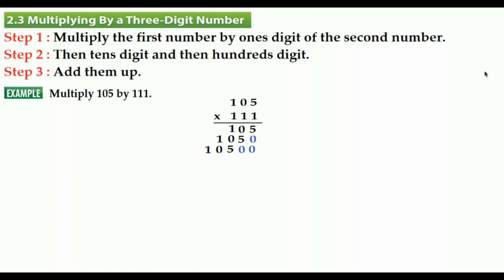Now we are going to add them up. 5 plus 0 plus 0 makes 5. 0 plus 5 plus 0 makes 5. 1 plus 0 plus 5 makes 6. 0 plus 1 plus 0 makes 1. Then we bring down the 1. The answer is eleven thousand six hundred fifty-five.